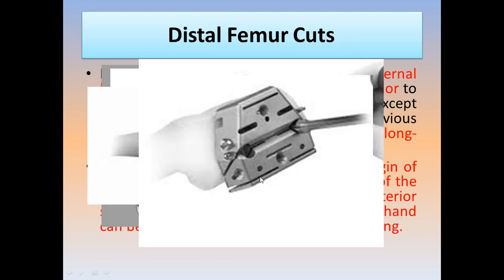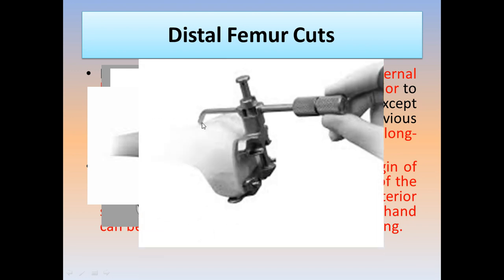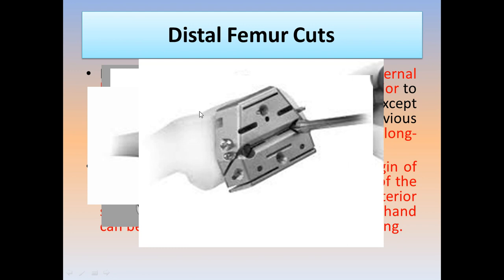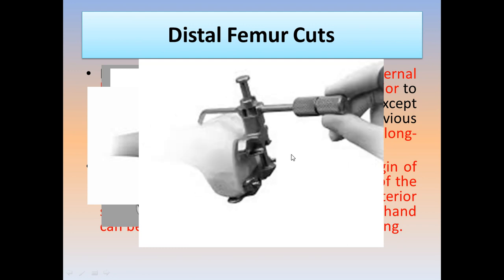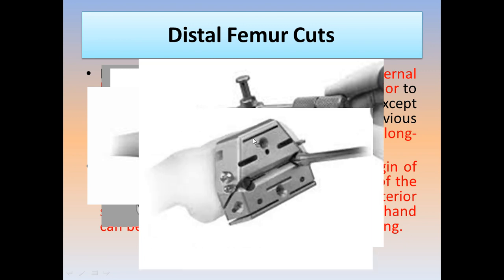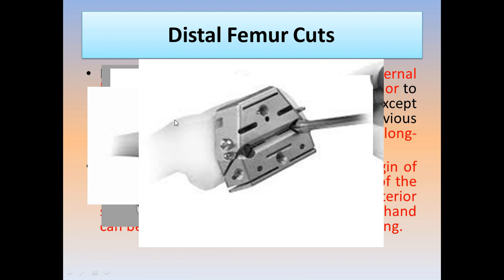Another tip: when selecting the size, avoid going smaller. If you take a smaller size and the anterior cut goes below the anterior cortex of the femur, you will create a notch — making the bone more susceptible to periprosthetic fracture later. This is why we take the larger size. Place the sizing guide, rotate it around the femur, and check that its wing is above or touching the anterior femoral cortex — if not, take the next larger size.